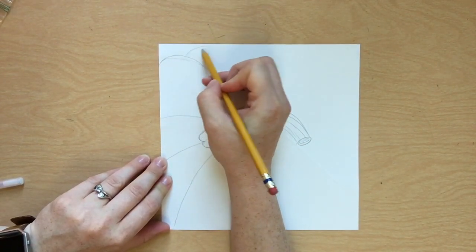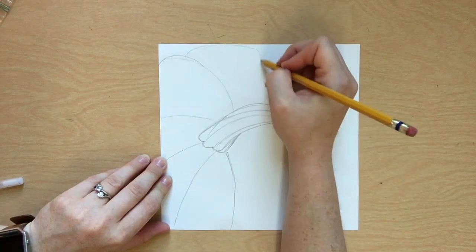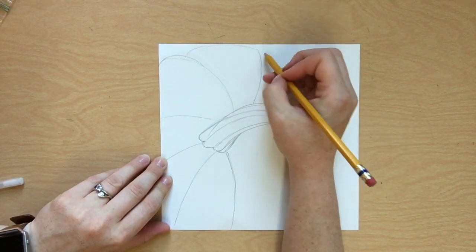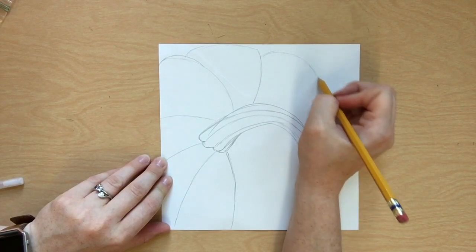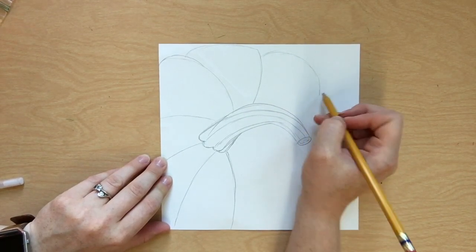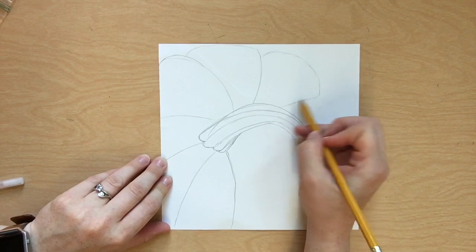Now, for our next part, we will start to see the edge of the pumpkin. The bottom left corner, we're not seeing the edge. The pumpkin is cropped where we only see part of it.